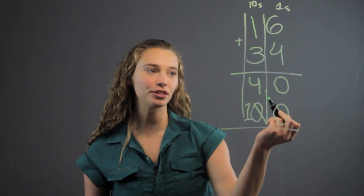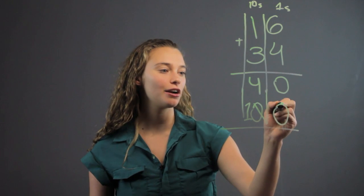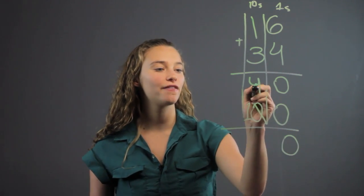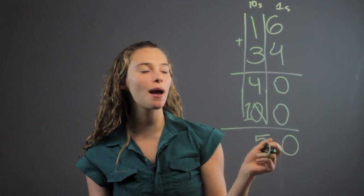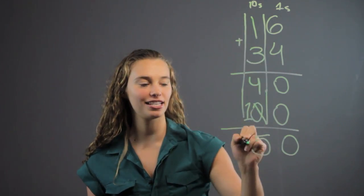And then we just add them just like we normally would. Zero plus zero is zero and four plus one is five. So the answer is 50, but we use partial sums because we added it with these columns.